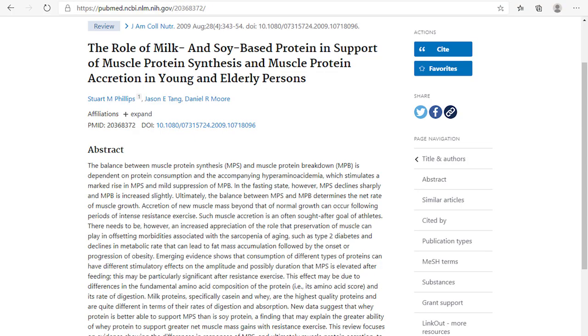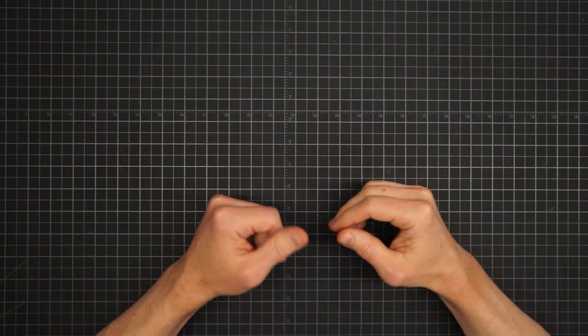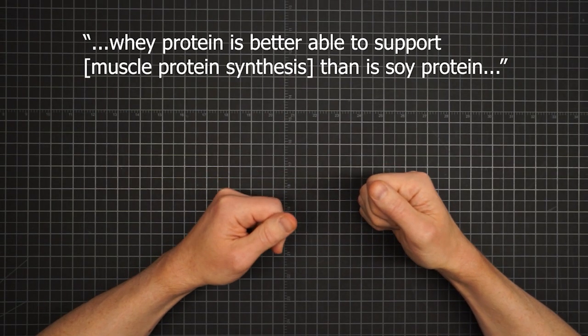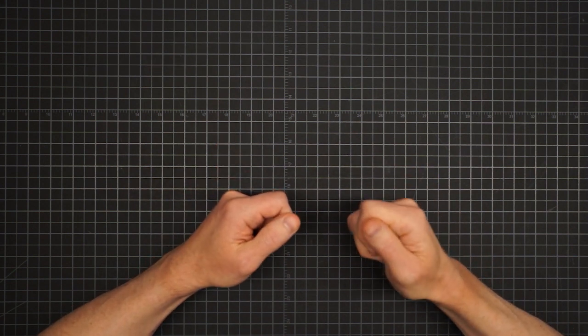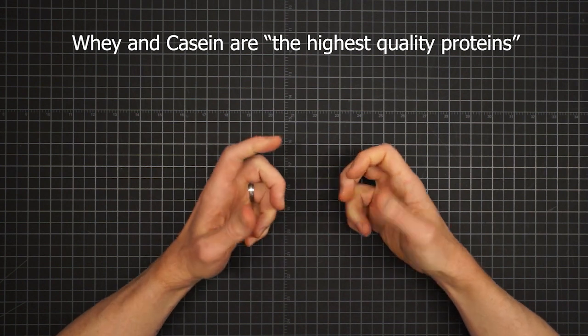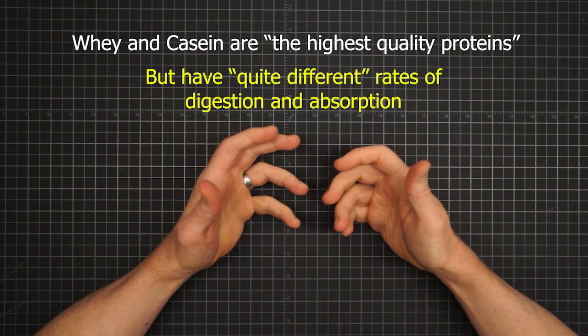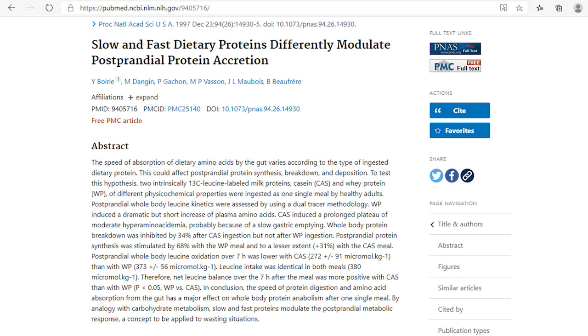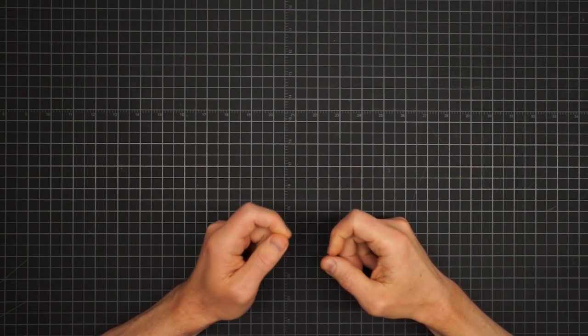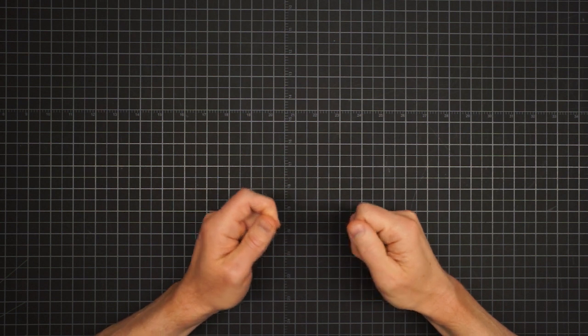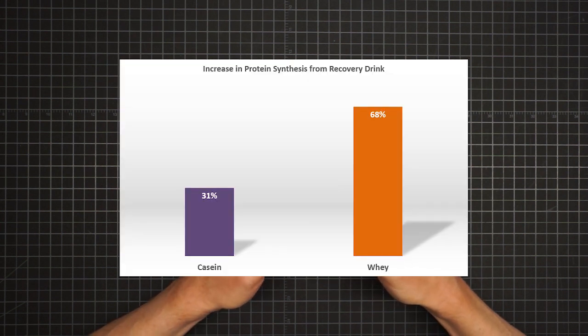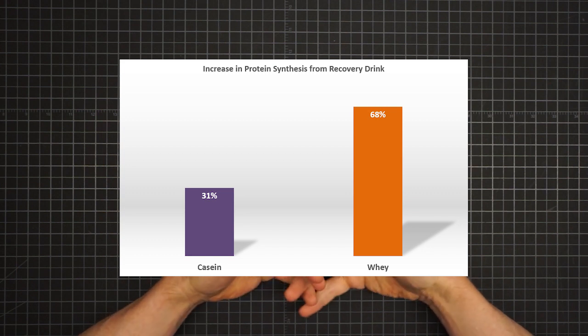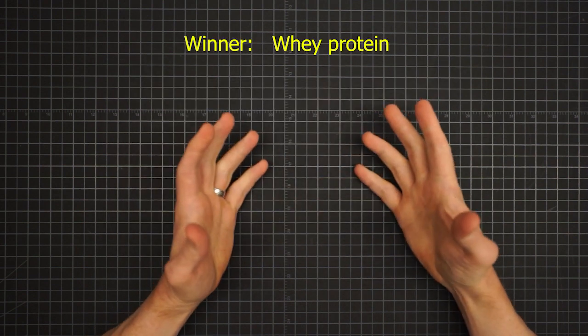I found this study published in the Journal of the American College of Nutrition on the role of milk versus soy-based protein in support of protein synthesis. Researchers found that whey protein is better able to support muscle protein synthesis than is soy protein. They also stated that whey and casein are the highest quality proteins, though it was acknowledged that they have quite different rates of digestion and absorption. So lastly, I found this study published in the Proceedings of the National Academy of Sciences regarding slow and fast dietary proteins. They found that not only does whey absorb more quickly than casein, but they also in turn confirmed that quicker is in fact better. The faster whey resulted in a 68% increase in protein synthesis compared to only 31% for the slower casein. So whey is the easy winner.